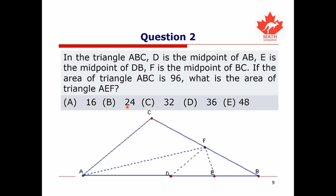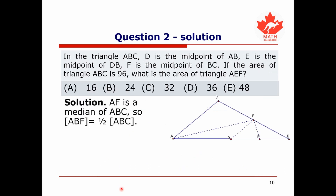We're now ready for our second question. We're given triangle ABC where D is the midpoint of AB, E is the midpoint of DB, and F is the midpoint of BC. The area of triangle ABC is 96, and we're asked to find the area of triangle AEF. Since F is the midpoint of CB, AF is a median of triangle ABC, cutting it into two triangles each with area one half the area of ABC. So triangle ABF has area one half of 96.